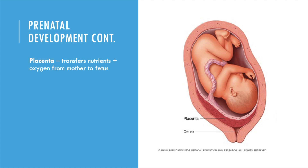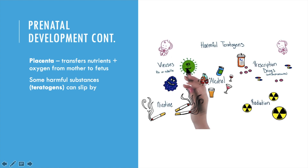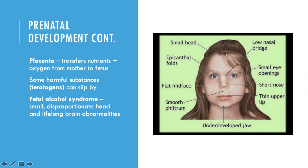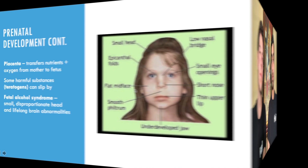For example, if the mom is a heroin addict, her baby will be born as a heroin addict. And please note that there is no safe amount of alcohol during pregnancy. About 1 in 800 infants born from mothers who drink have fetal alcohol syndrome, where we observe a small, disproportionate head and lifelong brain abnormalities in the baby.